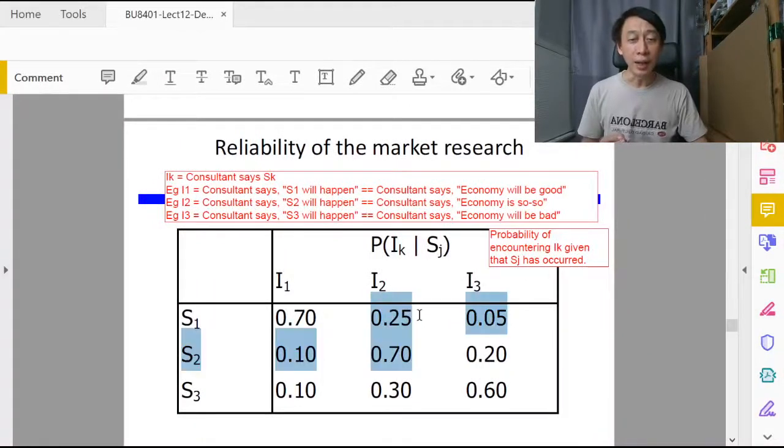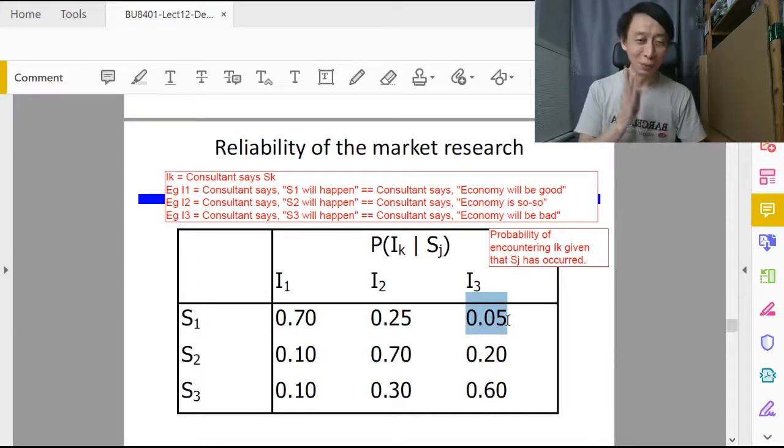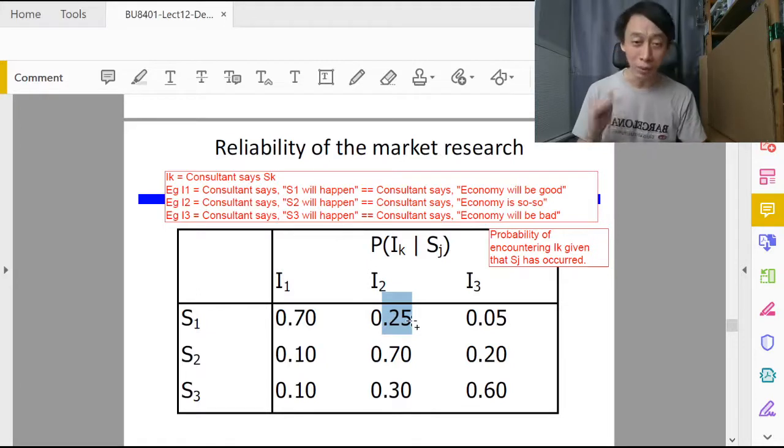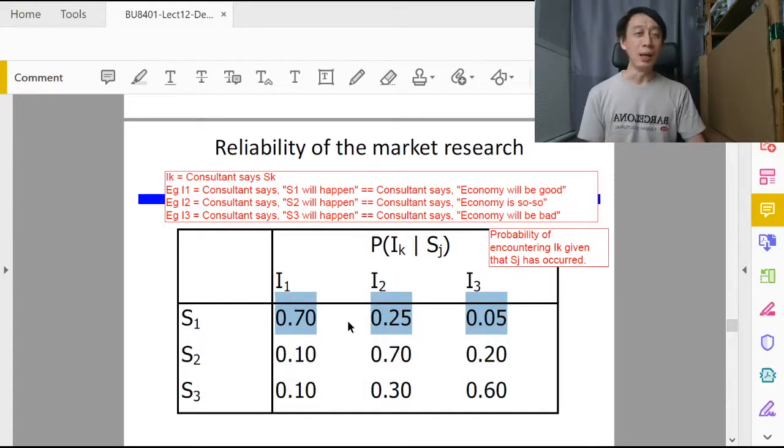Given that S1 happened, P of I2 given S1 is 25 over 100, so we get 0.25. And then of course the remaining five days out of 100 is that the consultant incorrectly says it will go down and actually it went up. So it is wrong in a very specific way. Consultant says it will go down, here I2 is consultant is wrong. Consultant says it will be so-so, yet Dow Jones went up. So it's quite quantitative, quite specific as well. We know how wrong or in what way the consultant was wrong in the past in forecasting, in predicting.